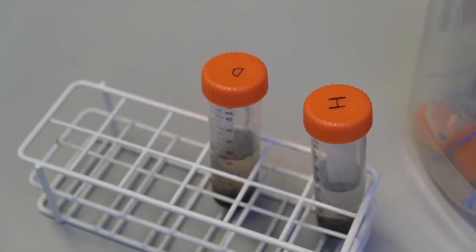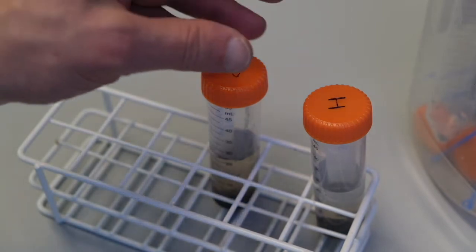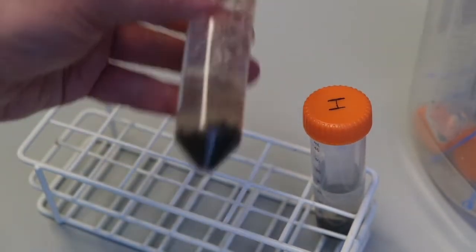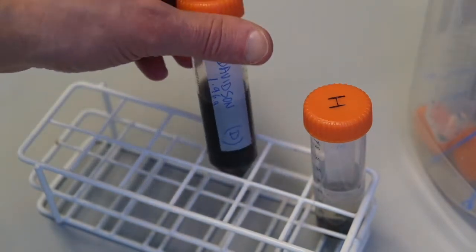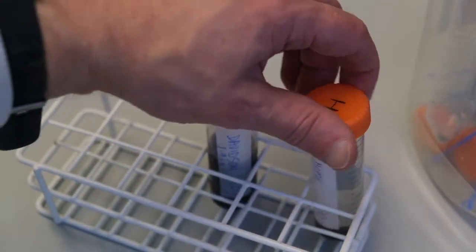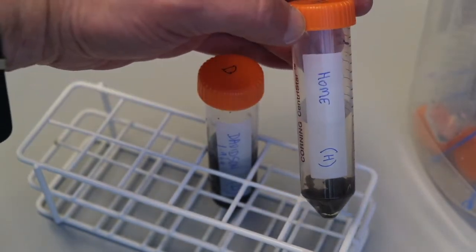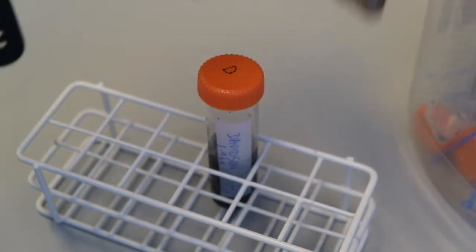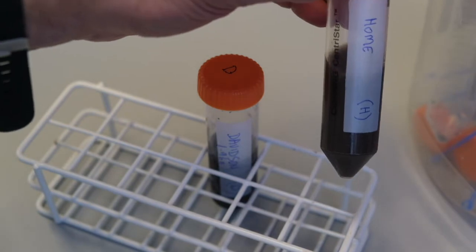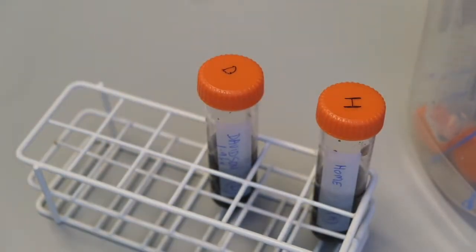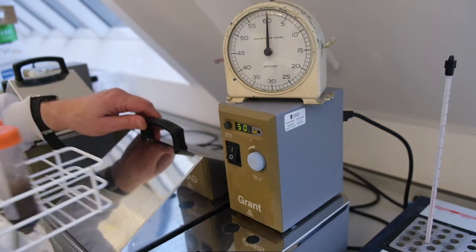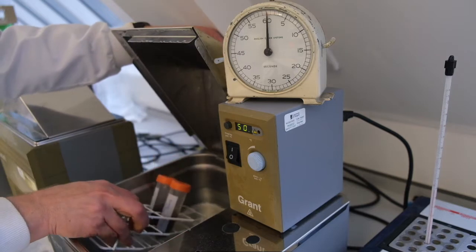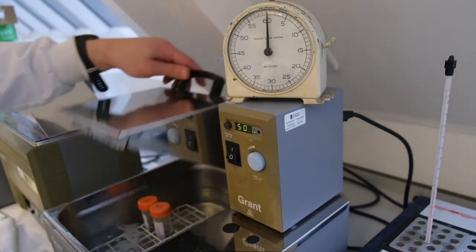Make sure the lids are on tightly and shake the tubes vigorously to break up and suspend the soil samples. Shake the samples again to make sure they are fully resuspended and then we place in a water bath at 50 degrees centigrade for one hour.